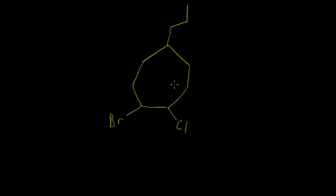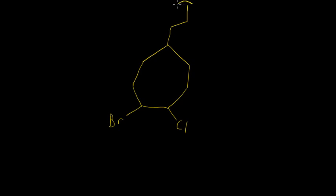In our last video we became more familiar with how to name compounds with alkyl groups coming off. This video is just going to be additional practice, and we're going to get straight into this example. First of all, we notice that it's a ring, so it's going to be a cyclostructure, and then we have this alkyl group coming off. It's all carbons, so I'll go ahead and circle this first and name it.